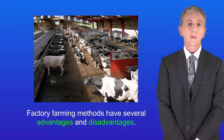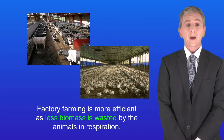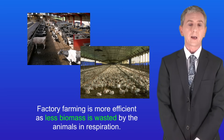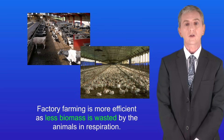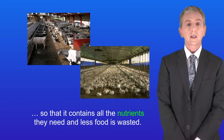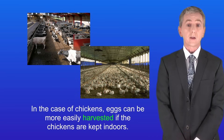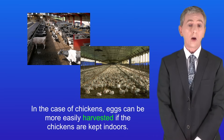Factory farming methods have several advantages and disadvantages and in the exam you could be asked to describe these. Factory farming is more efficient as less biomass is wasted by the animals in respiration. We can also control the food that the animals eat so it contains all the nutrients they need and less food is wasted. In the case of chickens, eggs can be more easily harvested if the chickens are kept indoors.